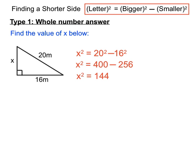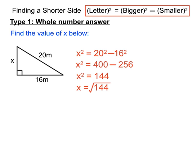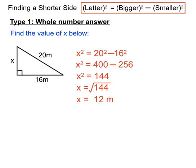Now to get x on its own, we want x not just x squared. To get x on its own, we'll have to square root both sides. So we have square root of 144. Now 144 square roots nicely to be 12. So that's a whole number answer. We took the letter and squared it, we had the bigger number and squared it, and we subtracted from that the smaller number squared. So when we're finding a shorter side, it's important to remember there's a subtraction in there.